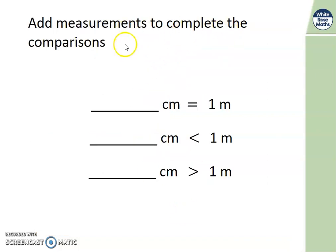We're going to add measurements to complete these comparisons. So we're going to fill in these gaps. On each side we've got centimetres. And we're comparing it to one metre. Here we need equal to a metre. Here we need less than a metre. And here we need greater than a metre. Pause the video and have a think. What numbers could go in those gaps? For two of those answers, it could have more than one possibility. Shall we check how you did? First of all, one metre is the same as 100 centimetres. That was one of our key facts from the beginning. Do you remember?